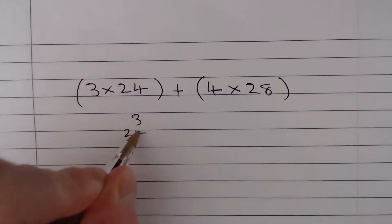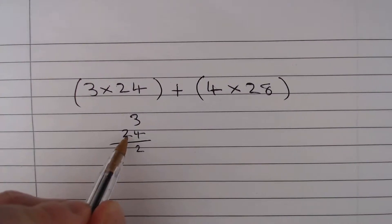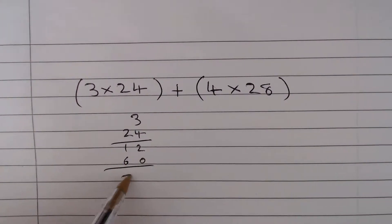What we can do is 3 times 24 as follows: 4 3s are 12, 2 3s are 6 with a 0, that gives us 72.